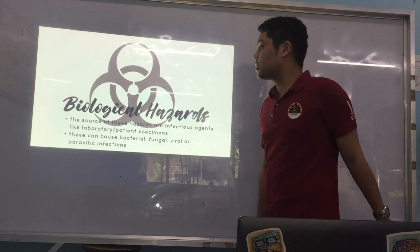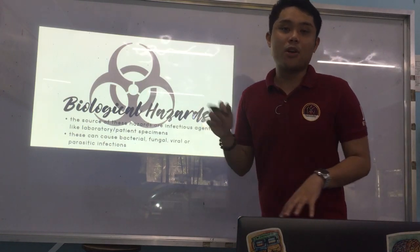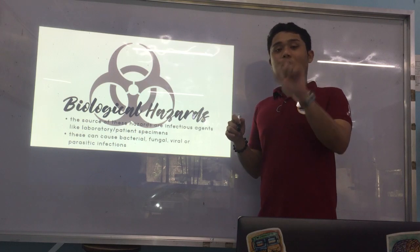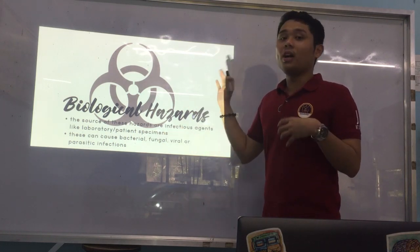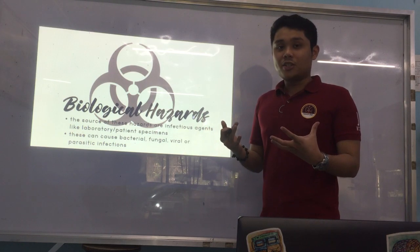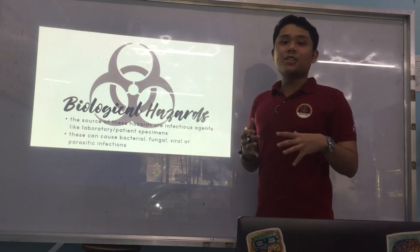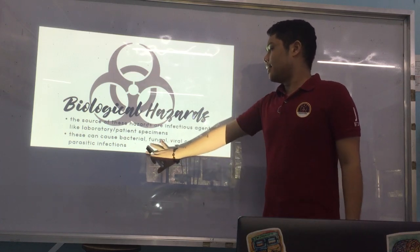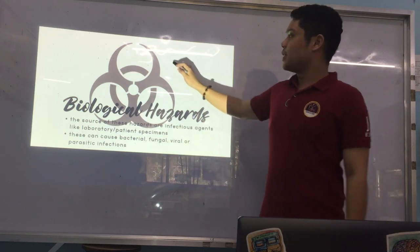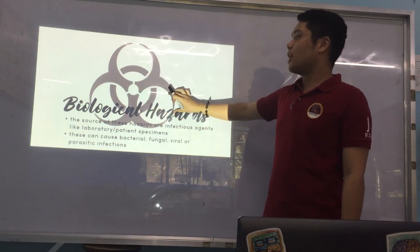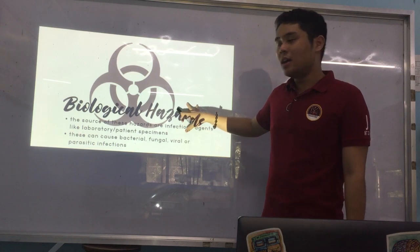Our first hazard is biological hazards. When we say biological hazards, the source of these hazards are infectious agents themselves — it could be bacteria, viruses, parasites, or even fungi — and these can cause bacterial, fungal, viral, or parasitic infections. Please take note of the biological hazard symbol, or biohazard symbol. It is described as three circles with an overlapping one circle at the center.